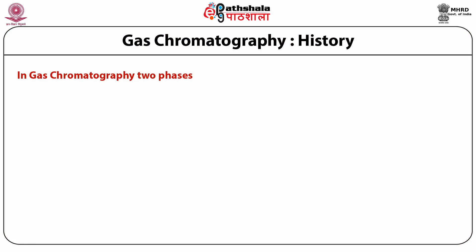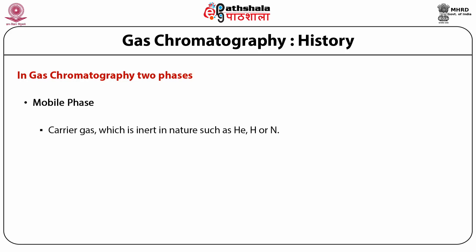Gas chromatography consists of a flowing mobile phase, which is generally inert gases like helium, argon or nitrogen. The mobile phase in GC is a carrier gas which is inert in nature, such as helium, hydrogen or nitrogen. Helium is the most commonly used carrier gas as 90% of the instruments use it. However, for better separation, hydrogen is the preferred gas. Next is the injection port, which consists of a rubber septum through which a syringe needle is inserted to inject the sample. The injection port is maintained at a higher temperature than the boiling point of the least volatile component in the sample mixture.